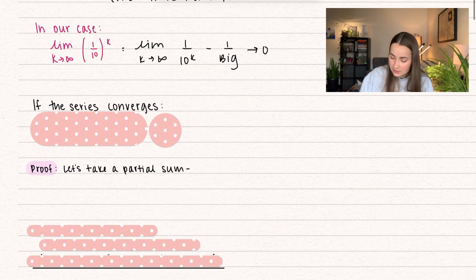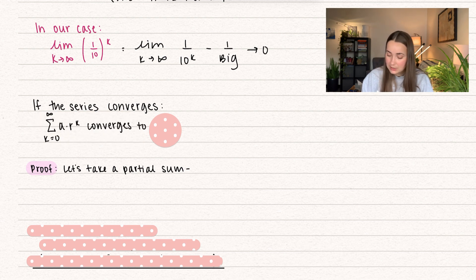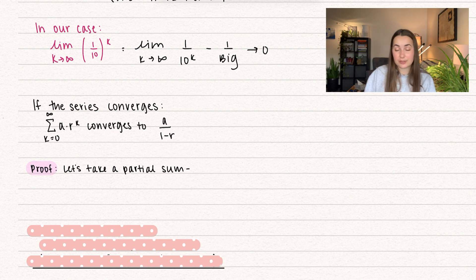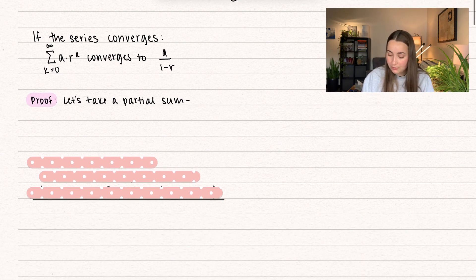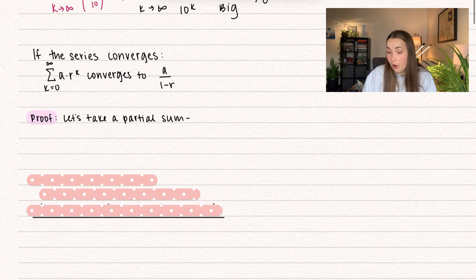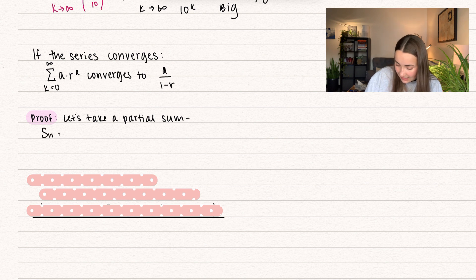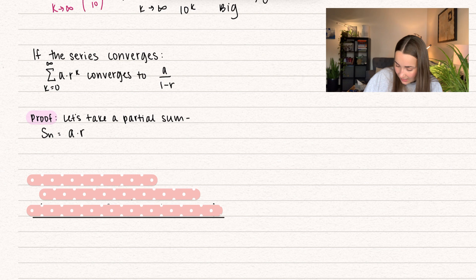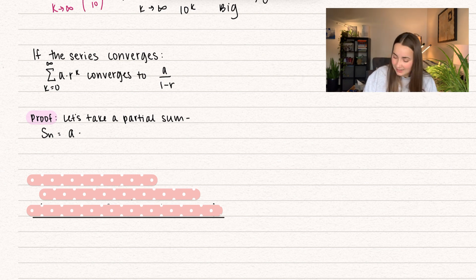So if the series converges, we're actually able to know what it converges to. The series converges to a — the first term — divided by 1 minus r, the common ratio. For the proof, we're going to show how this actually works. We'll first take a partial sum. So sn, my partial sum, is going to be equal to a times r to the power of 0 — which I can just rewrite as a — plus a times r to the power of 1, plus a times r squared, a times r cubed.